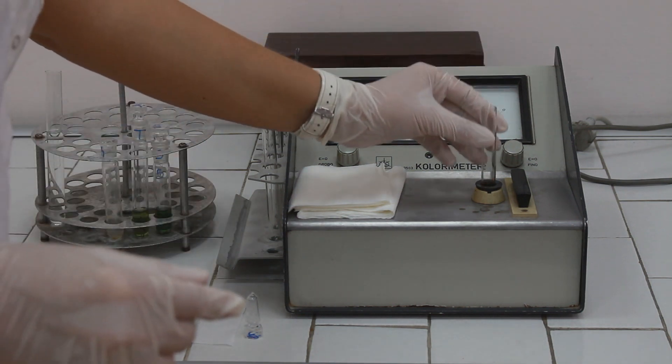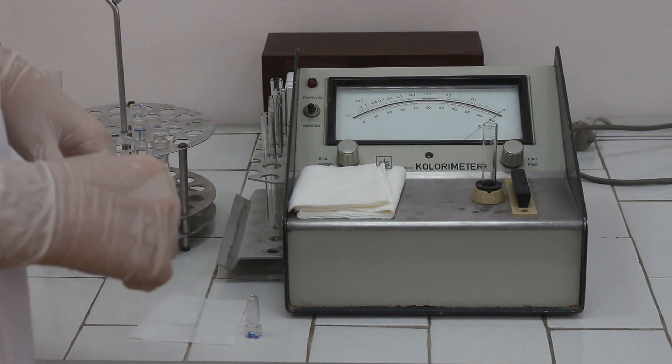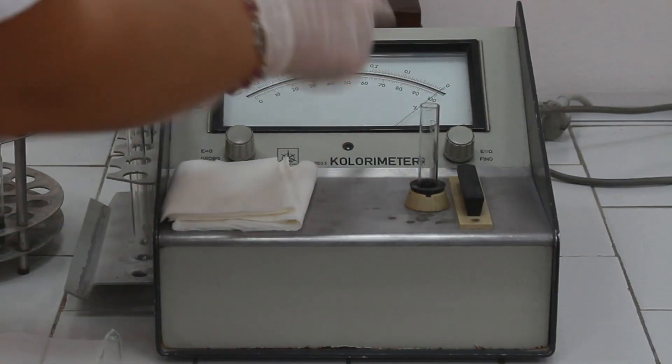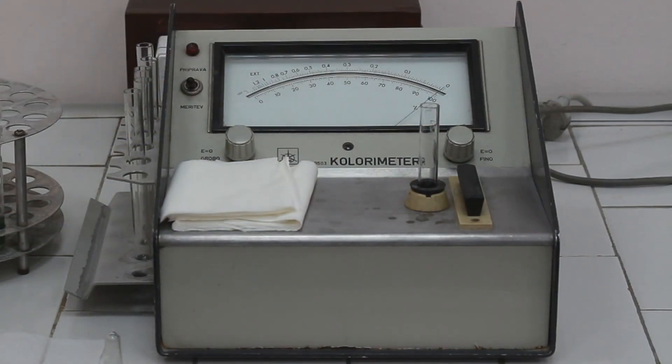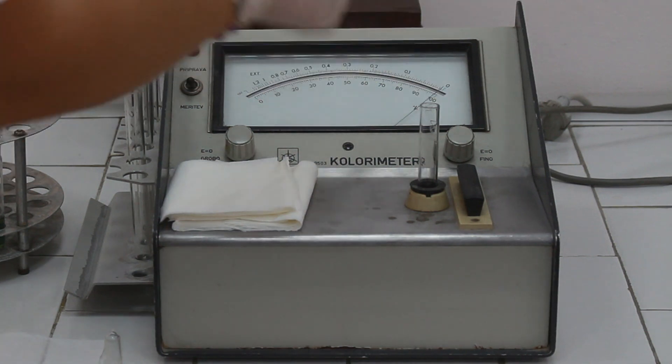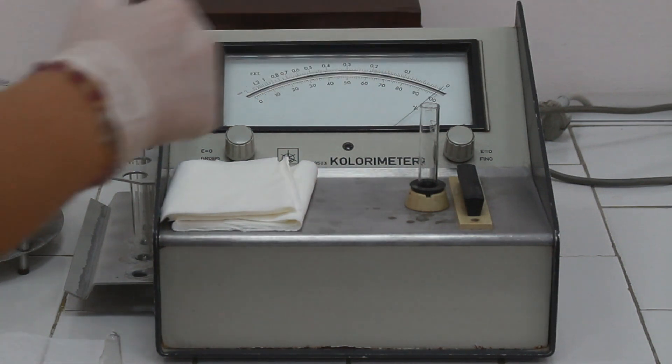And place the cuvette to the photometer. By using these two wheels, we have to adjust the instrument to zero. Left wheel for the rough adjustments and right wheel for the fine adjustments of the zero.